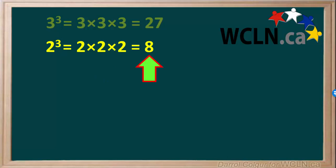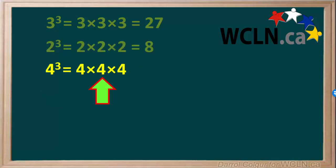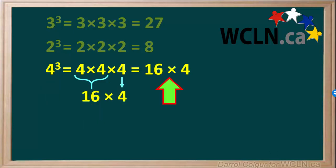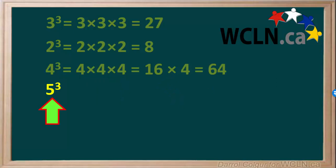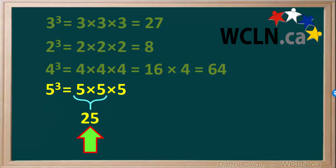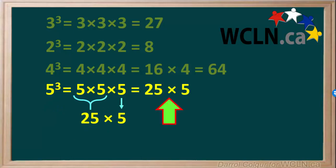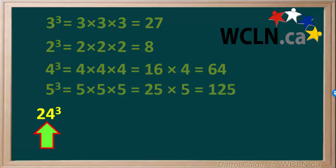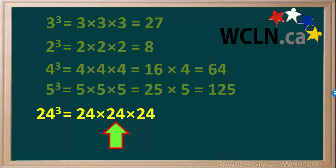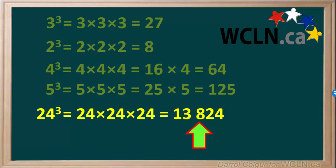So 2 cubed is equal to 8. We can also calculate 4 cubed, which is equal to 4 times 4 times 4. 4 times 4 is equal to 16, so 4 times 4 times 4 is equal to 16 times 4, which is equal to 64. Similarly, we can calculate 5 cubed, which is equal to 5 times 5 times 5. 5 times 5 is equal to 25, so 5 times 5 times 5 equals 25 times 5, which is equal to 125. Larger numbers cubed can be determined using a calculator. For example, 24 cubed equals 24 times 24 times 24, which using a calculator gives us 13,824.